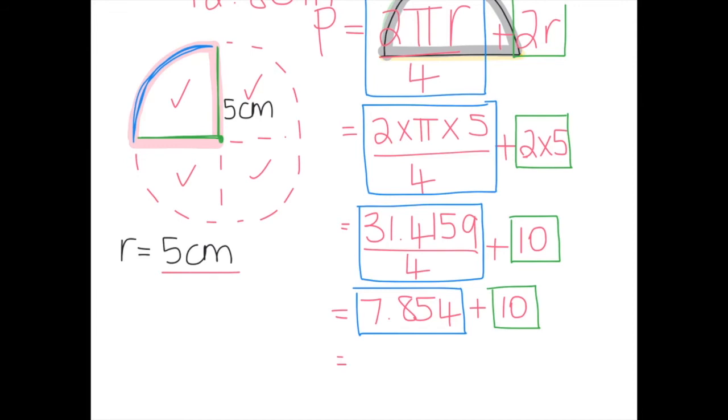7.854 plus 10 is 17.854, but I only want two decimal places. That 4 isn't going to round it up, so 17.85, dealing in centimeters. So the perimeter of that quarter circle is 17.85, because we've taken into account that 7.85 of the outside plus the two radius lines that add to 10, so 17.85 centimeters for that quarter circle.